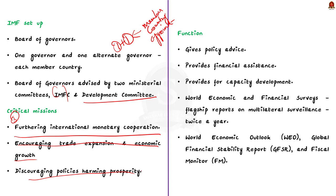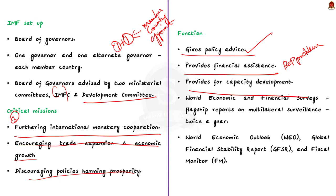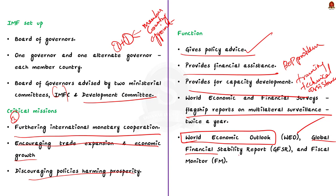How does IMF work? Firstly, the IMF gives policy advice — it monitors economic and financial developments and advises countries. Secondly, the IMF provides financial assistance, that is, loans and other financial assistance to member countries, especially those experiencing actual or potential balance of payments problems. Thirdly, the IMF provides capacity development by providing technical assistance and training to help governments implement sound economic policies. As part of its World Economic and Financial Surveys, the IMF publishes flagship reports twice a year, including the World Economic Outlook, WEO, the Global Financial Stability Report, GFSR, and the Fiscal Monitor, FM.